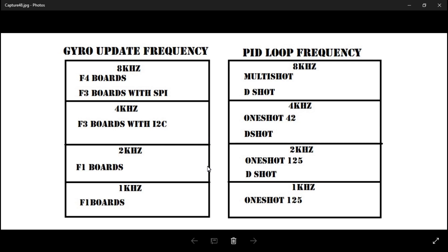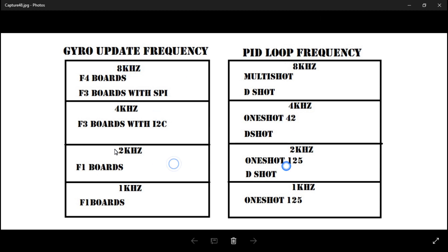To reiterate the rules: you don't want your PID loop frequency to be higher than your gyro update frequency. So don't do 1k/2k, 2k/4k, 2k/8k, or 4k/8k. You can run them the same — 8k/8k, 4k/4k, 2k/2k — or lower on the PID: 8k/4k, 8k/2k, 4k/2k. All of this assumes your CPU load is low enough that your processor isn't being overloaded. That's gonna do it for this one guys — I'll leave a link to my playlist in the description. Thanks for watching and I'll see you again soon.